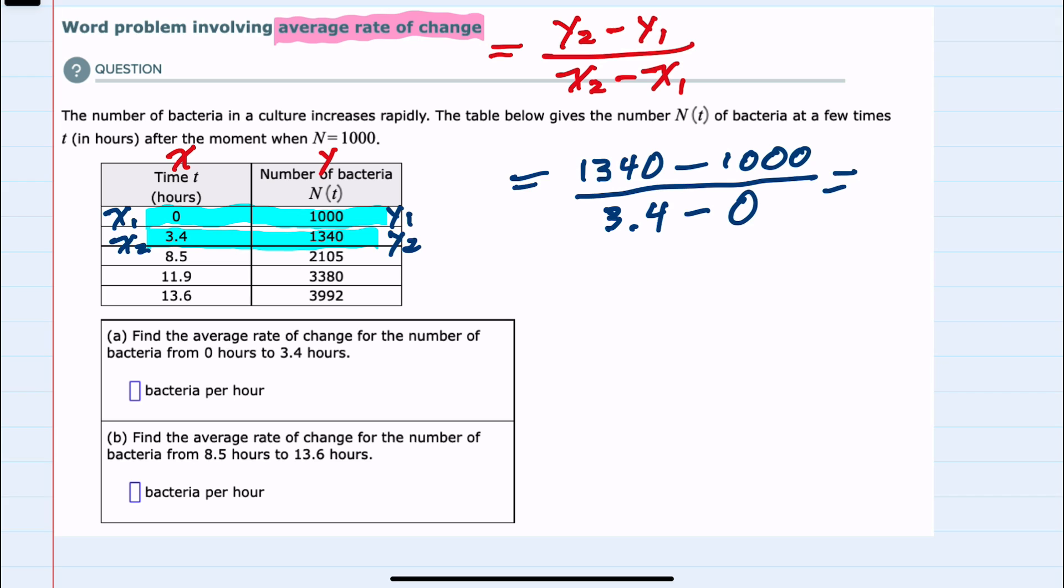Simplifying, we would have 340 in the numerator and 3.4 in the denominator. We can then divide to see that the average rate of change between these two points is 100 bacteria per hour.